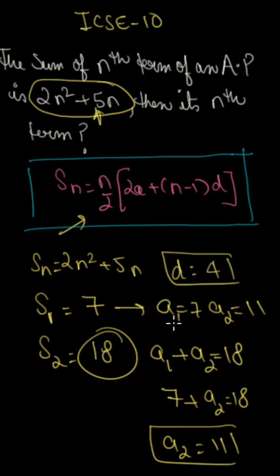So d equals 4, and a equals 7. Now we're going to find the nth term. So the formula is a plus n minus 1 times d. So a_n is 7 plus n minus 1 times 4.